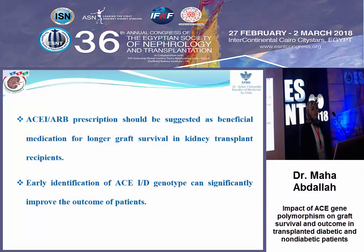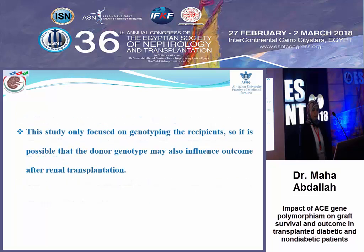Our recommendation is that prescription of ACE inhibitors or ARBs is a beneficial medication for long-term graft survival in kidney transplant. Early identification of the ACE ID genotype can significantly improve the outcome of patients. This study focused only on the recipient genotype, so it is possible that the donor genotype may also influence the outcome after renal transplantation.